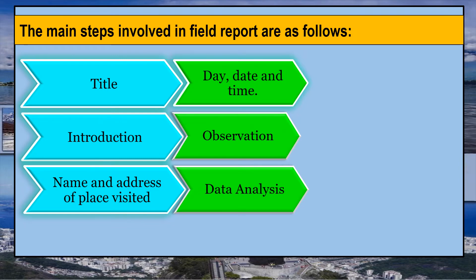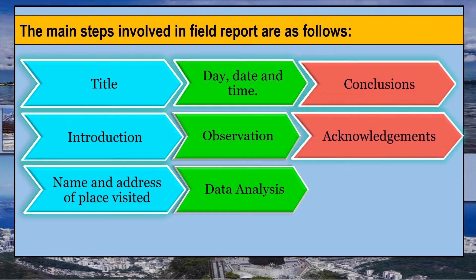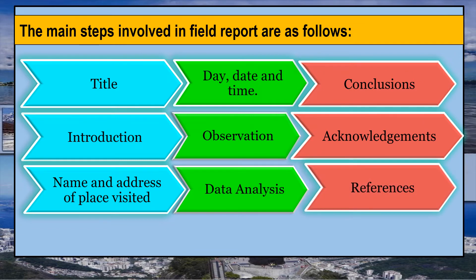Sixth, Data Analysis: data collected should be presented in a very simple way, represented according to the data collected. For example, if you use the observation method, data can be represented by photographs. Seventh, Conclusions: the conclusion gives the gist of the field visit — the aim, the results, and how it relates to your present knowledge and the additional knowledge from the field work. Eighth, Acknowledgements means thanking all those who helped you — teachers, principal, the official head of the factory visited, etc. Ninth, References means the source of information used in your report.